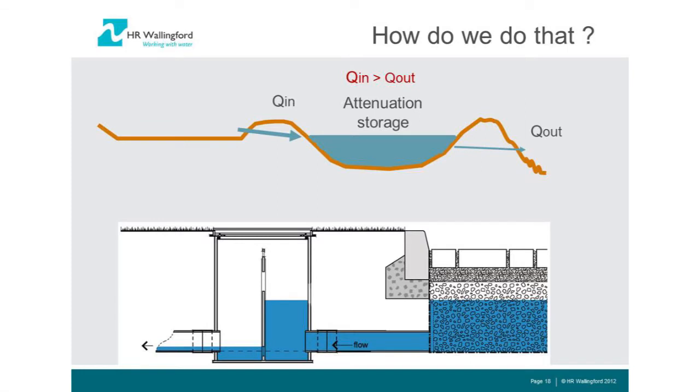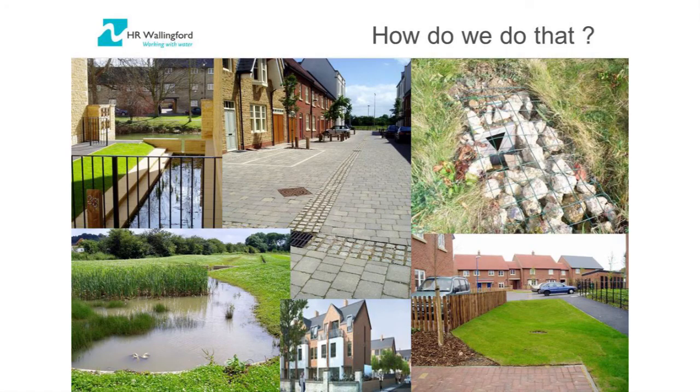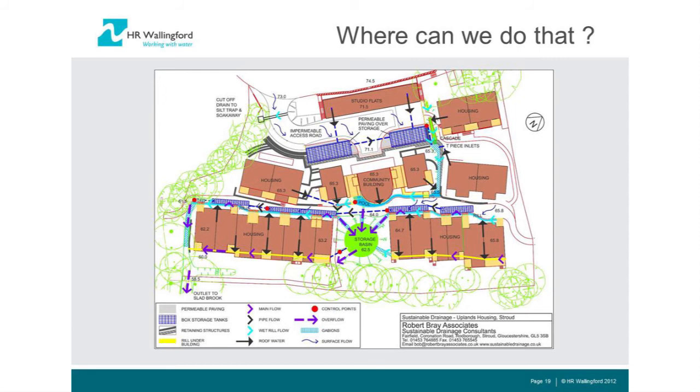To achieve this you put in attenuation storage systems where the inflow is much larger than the outflow. The storage fills and is released once inflow has reduced. Options include surface pond systems, dry detention systems, and permeable pavement systems that store water in the sub-base. Many of these pictures are from Bob Bray — this one in Stamford has concrete rills through the development that store water and are controlled at the downstream point of discharge.